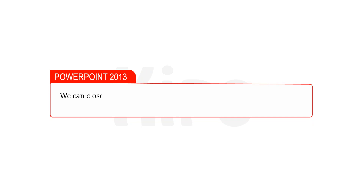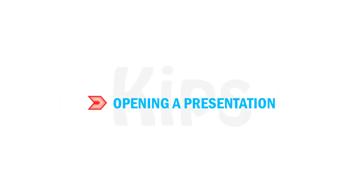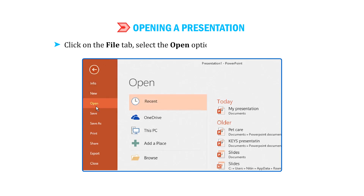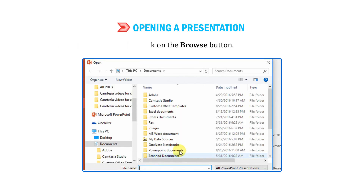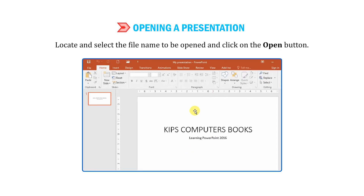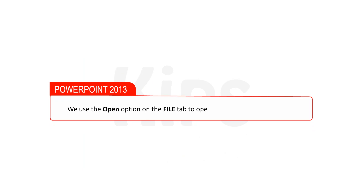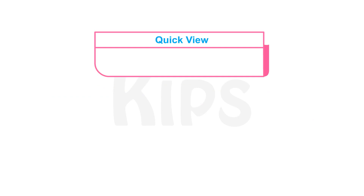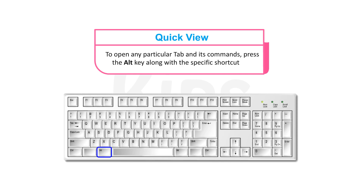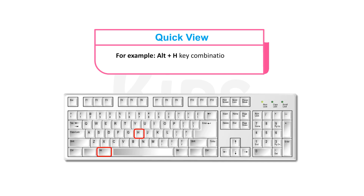We can close and exit the presentation in PowerPoint 2013 in the same way as we do in PowerPoint 2016. To open an existing presentation, click on the File tab. Select the Open option from the drop-down menu. The options related to Open will display in the right pane. Click on the Browse button. The Open dialog box will appear. Locate and select the file name to be opened and click on the Open button. We use the Open option on the File tab to open any file in PowerPoint 2013. Pressing the Alt key displays the shortcut key for each tab. To open any particular tab and its commands, press the Alt key along with the specific shortcut key — for example, Alt plus H key combination opens the Home tab.